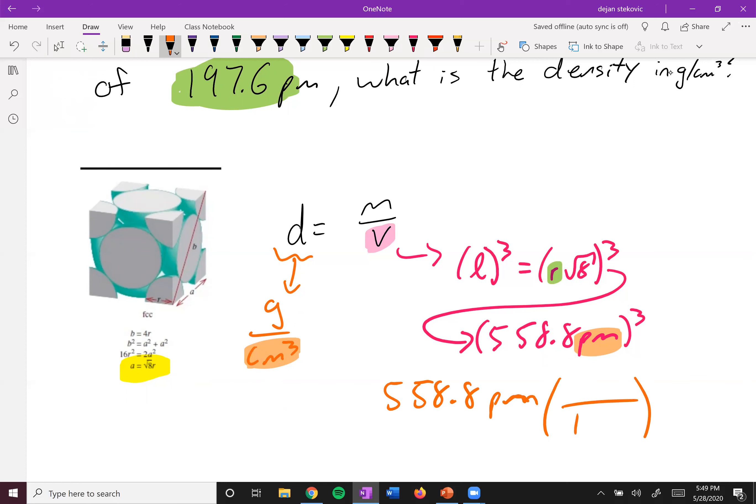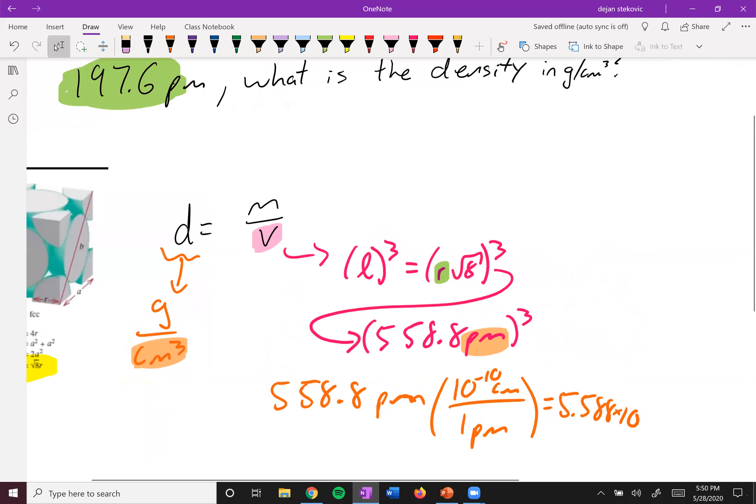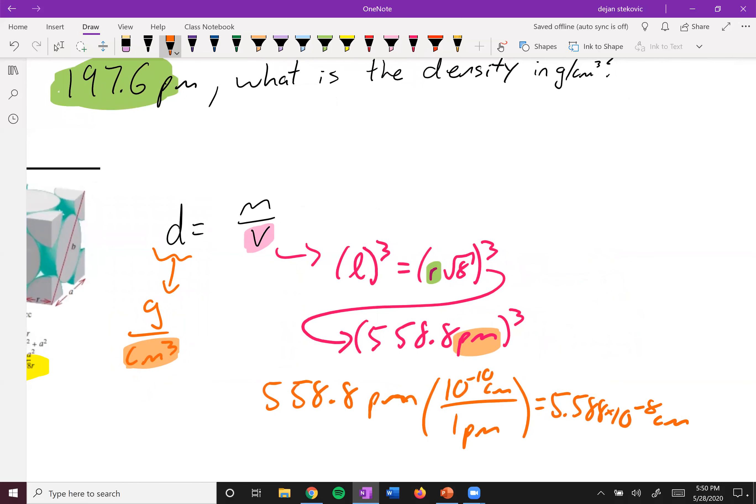So 558.8 picometers, right? We said one picometer is 10 to the negative 10 centimeters. So if you go ahead and do that conversion there, you get 5.588 times 10 to the negative 8 centimeters.